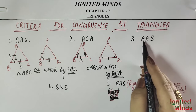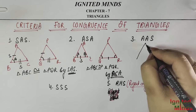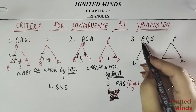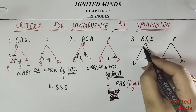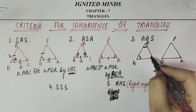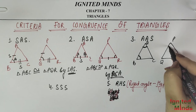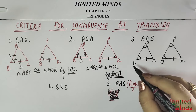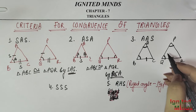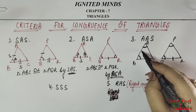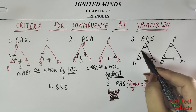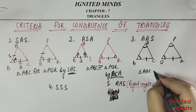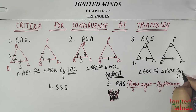Next, we have AAS — Angle Angle Side. Let me make a figure. In AAS, we have two angles but the side does not have to be the included side — it can be a non-included side. This angle is equal to this angle, this angle is equal to this angle, and one side is equal. So Triangle ABC is congruent to Triangle PQR by AAS.